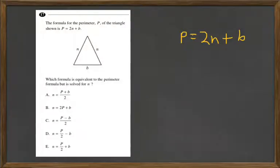The formula for the perimeter P of the triangle shown is P equals 2N plus B. Which formula is equivalent to the perimeter formula but is solved for N?